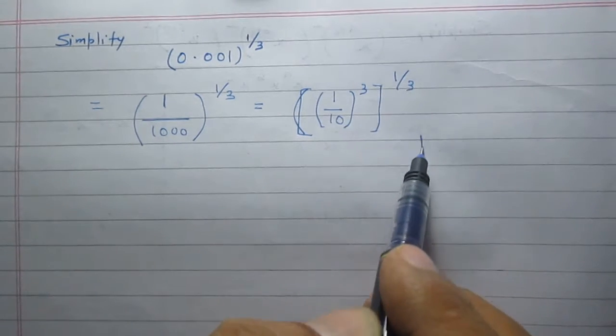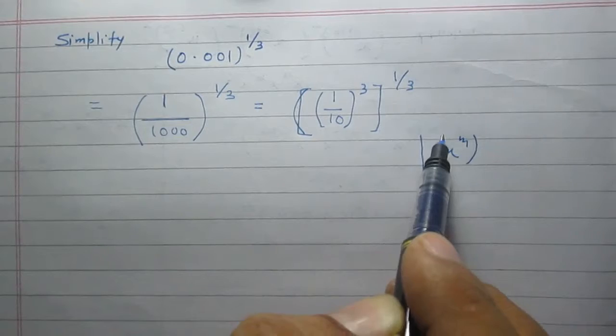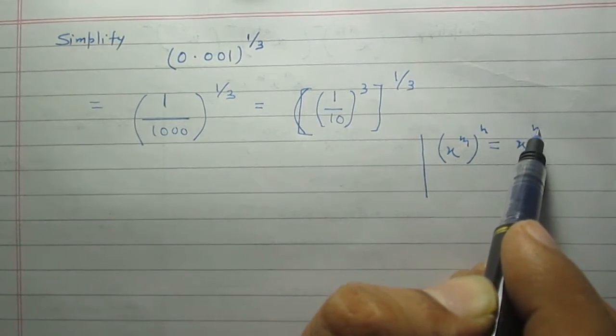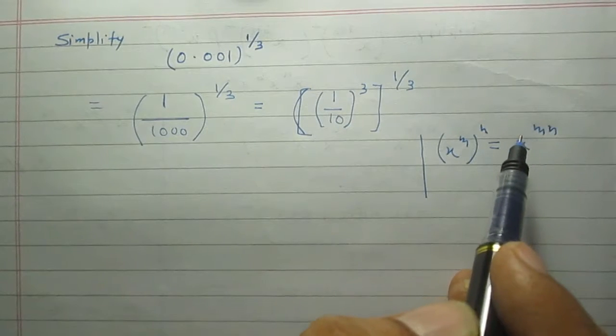According to the laws of exponents, I know that x raised to the power m raised to the power n is equal to x raised to the power multiplication of m and n.